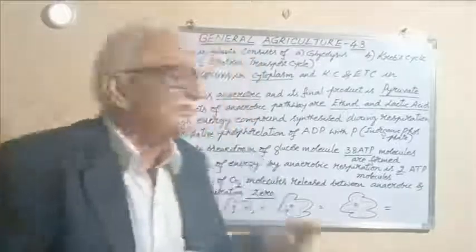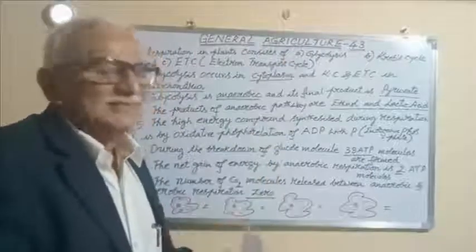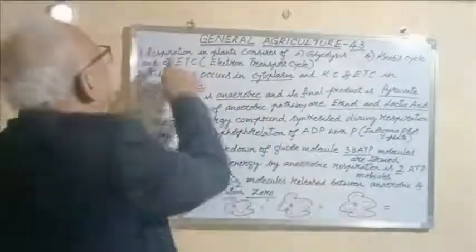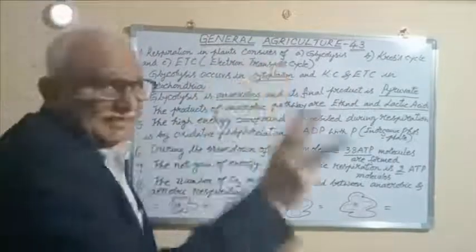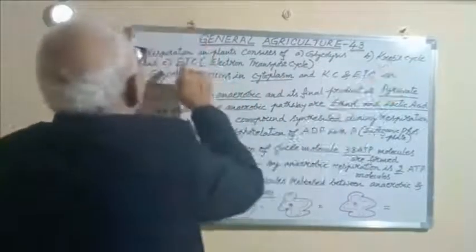Dear students, welcome to our class on general agriculture 43. In this class on crop physiology, we are going to study respiration in plants, which consists of three parts: glycolysis, Krebs cycle, and electron transport cycle.